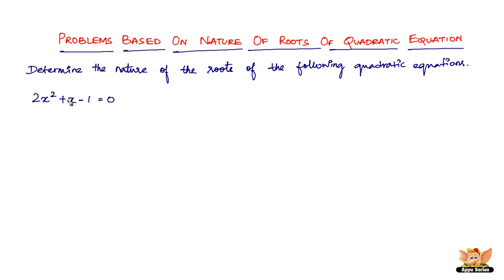To find this, we first have to find the discriminant D, which is equal to b squared minus 4ac. From this equation we get a equals 2, b equals 1, and c equals negative 1.